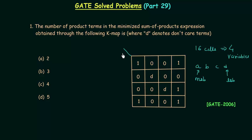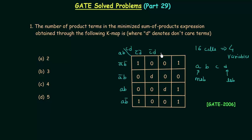I will modify this K-map with labels A, B, C, D. The first row is for A complement B complement, the second row is for A complement B, the third row is for AB, and the last row is for AB complement. The first column is for C complement D complement, the second column is for C complement D, then C D, and the last column is for C D complement.